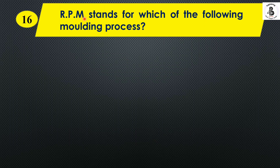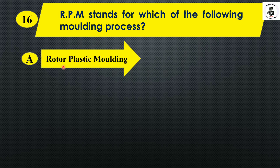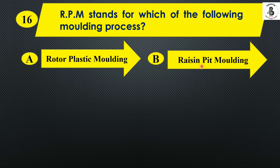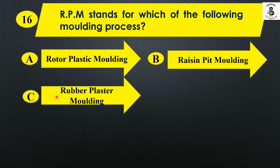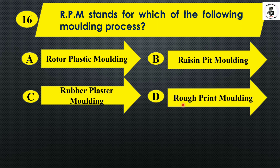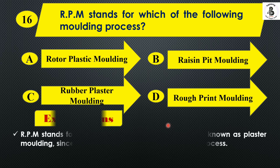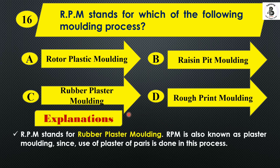Question 14: RPM stands for which of the following molding processes? Option A: rotor plastic molding. Option B: resin peat molding. Option C: rubber plaster molding. Option D: rough print molding. RPM stands for rubber plaster molding, which is also known as the plaster molding process, and uses plaster of Paris. So the right answer is Option C.